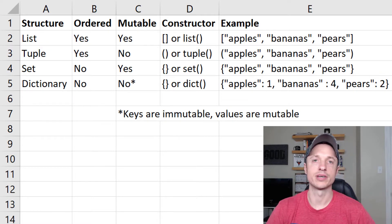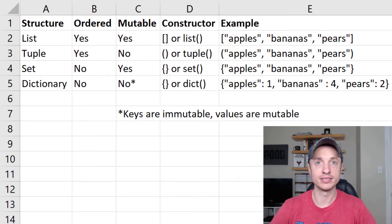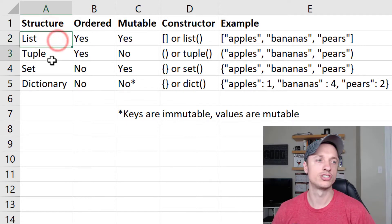In the next few videos, we're going to go through four different data structures. And this video right here is kind of like an introduction to those data structures, so you can see the difference between them. The four structures we're going to go through are lists, tuples, sets, and the dictionary structure.